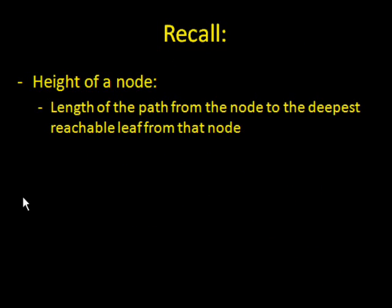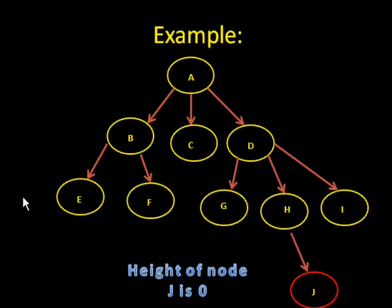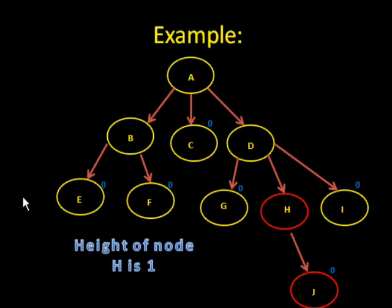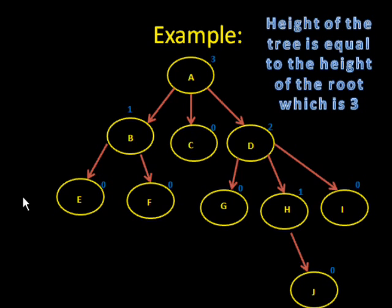Now, recall what the height of the node is. That is the length of the path from the node to the deepest reachable leaf from that node. Well, here's an example of that. The height of node J is zero. The heights of E, F, G, I, and C are all also zero. The height of the node H is one. The height of the node D is two. The height of node B is one. And the height of node A is three. The height of the total tree is also three, which is equal to the height of the root.